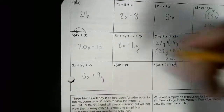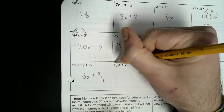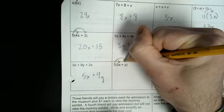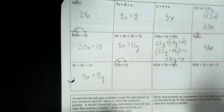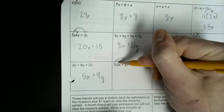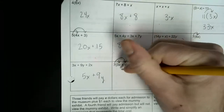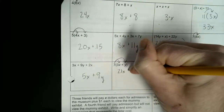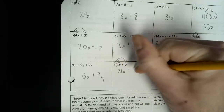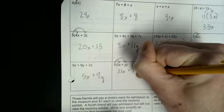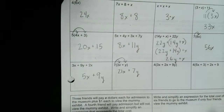For this one, we'd use the distributive property. We can multiply the 7 by both terms in the parentheses. 7 times 3x would be 21x, plus 7 times y would be 7y. And that's it — that's all you do there.